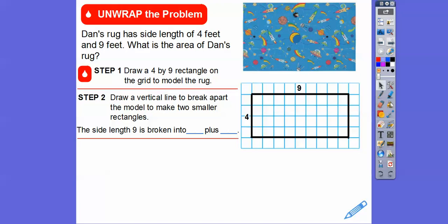But they're asking us to draw a vertical line to break apart the model and to make two smaller rectangles. So we can break the line anywhere. A vertical line is up and down. So I can draw a line right here or a line right here or a line right here or right here or right here. It doesn't matter. I think I drew a line right there. So what I did is I made, so now this is going to be 4 by 3 squares. And this is 4 also because that's 4. So this is going to be 4 by 1, 2, 3, 4, 5, 6 squares. Remember 3 plus 6 equals 9 right there. So the side length of 9 is broken into 3 plus 6 here.